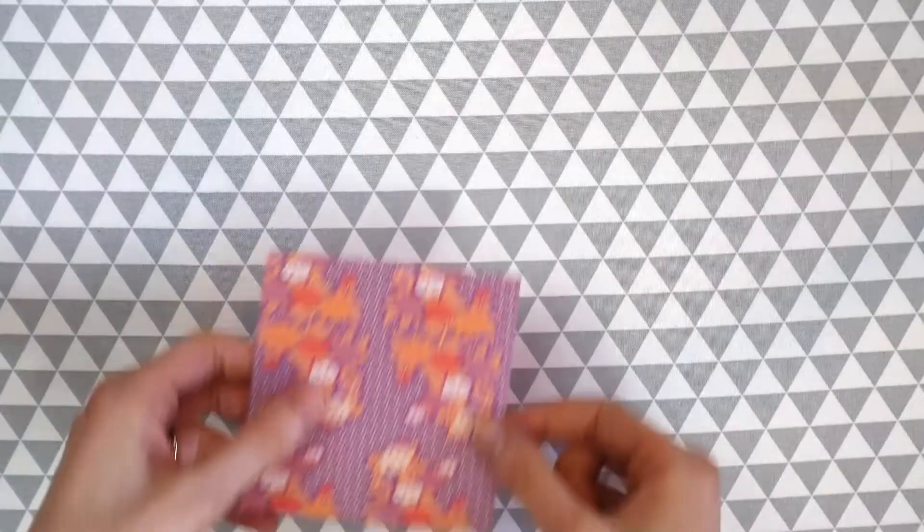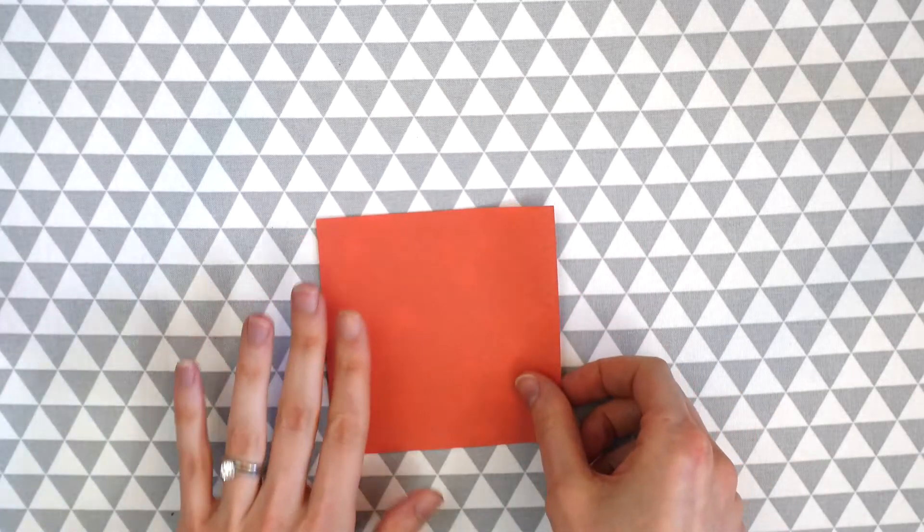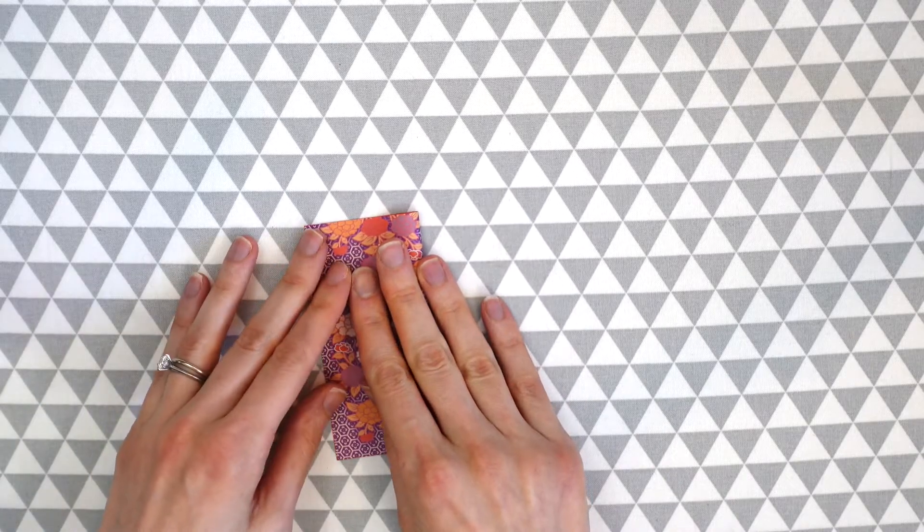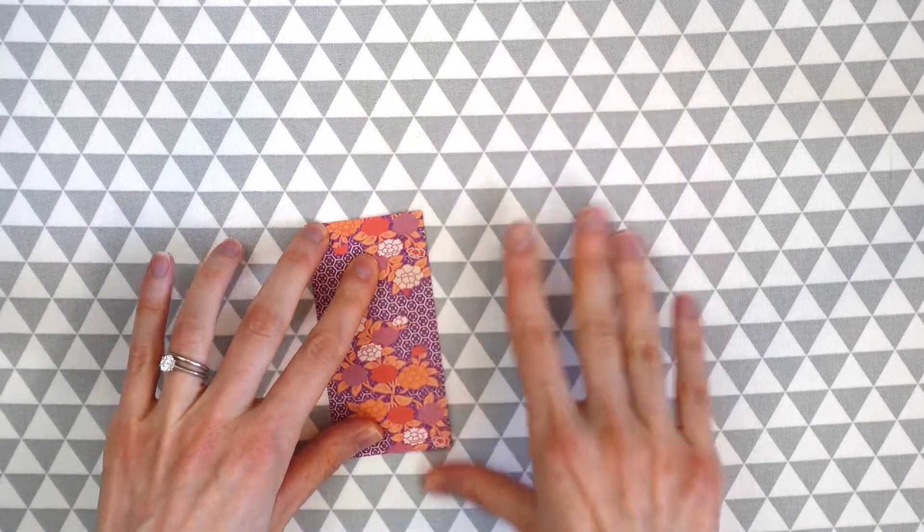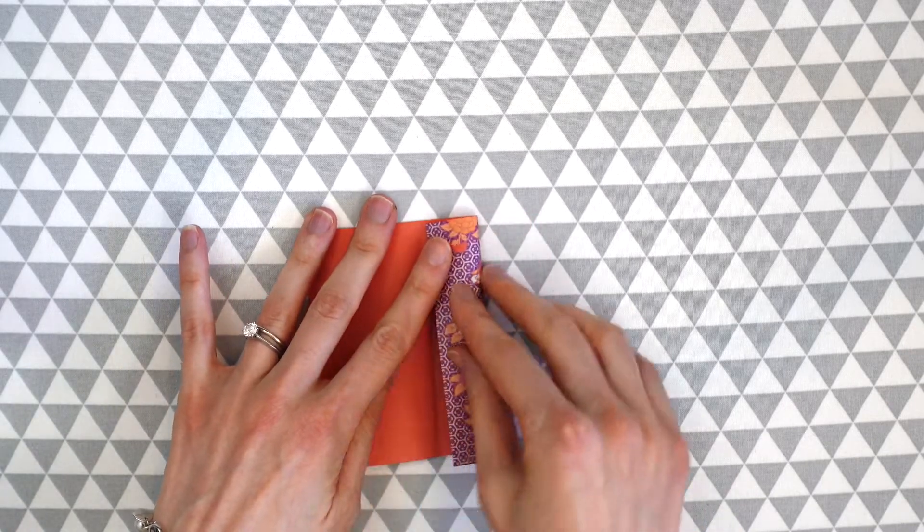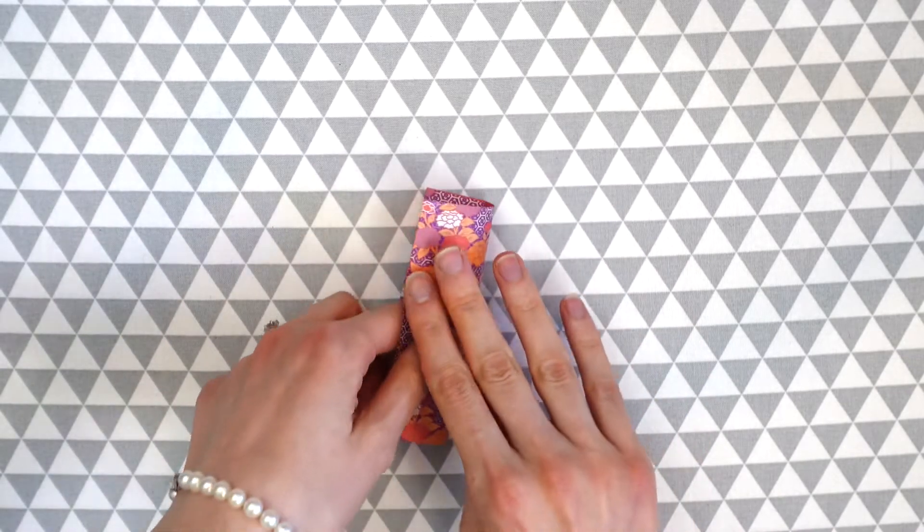Let's start with our first sheet of paper. We're going to take our origami paper and fold it in half. Open it up and then take one side and bring it to the center. Now take the other side and bring it to the center.